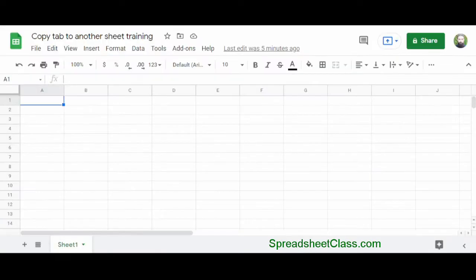In this case, I've already created this spreadsheet that I want to move the tab into. Here you can see I have the empty spreadsheet 'Copy tab to another sheet training,' and the only sheet that's on it is this blank Sheet 1.